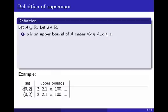For example, if I consider either the closed interval [0,2] or the open interval (0,2), then 2 is certainly an upper bound. But so does 2.1, or π, or 100, or in fact any number greater than 2. So these sets have a lot of upper bounds.